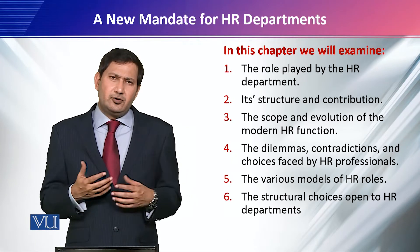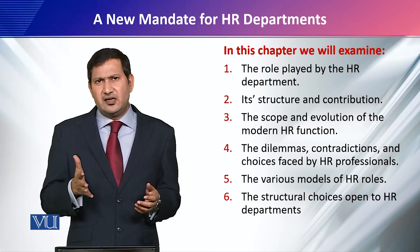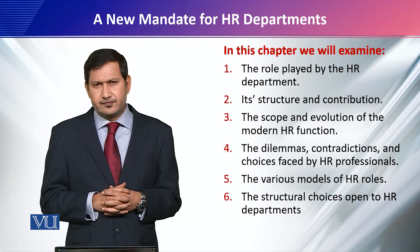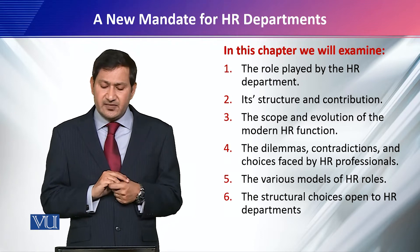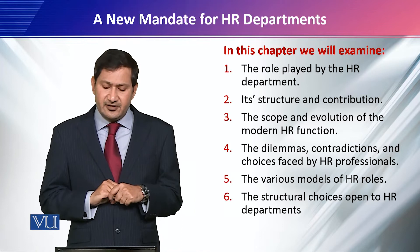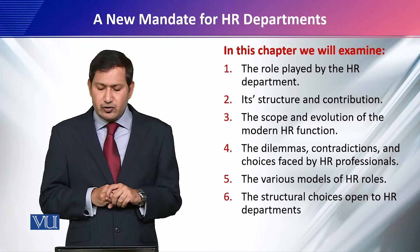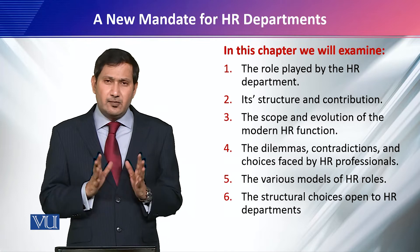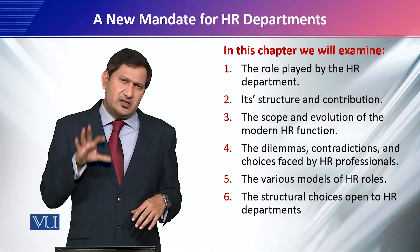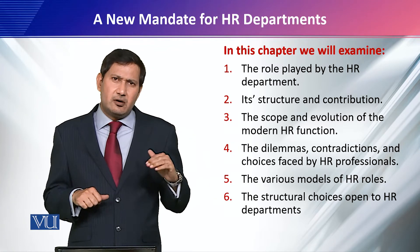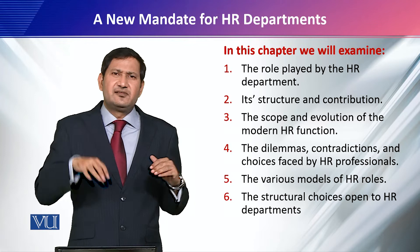To achieve these learning objectives, we will discuss these concepts in this module and chapter: the role played by the HR department, its structure and combination, the scope and evolution of the modern HR function, the dilemmas, contradictions and choices faced by HR professionals, the various models of HR roles, and the structural choices open to HR departments. When we have talked about these concepts, we will be able to accomplish the learning objectives of this chapter.